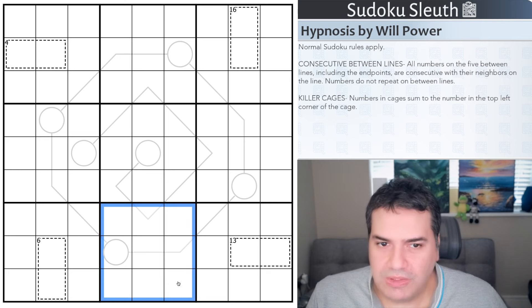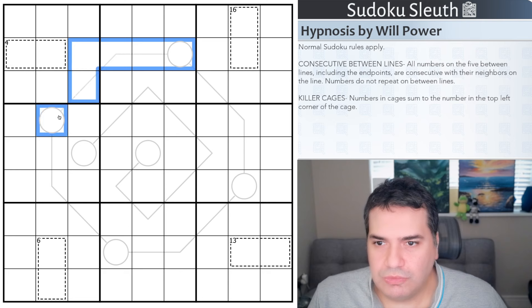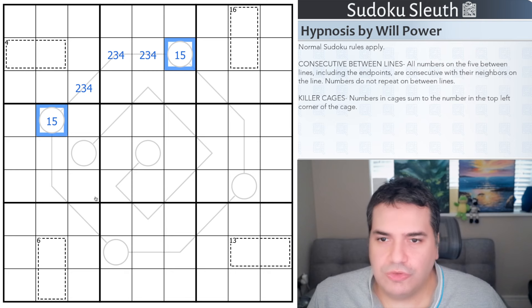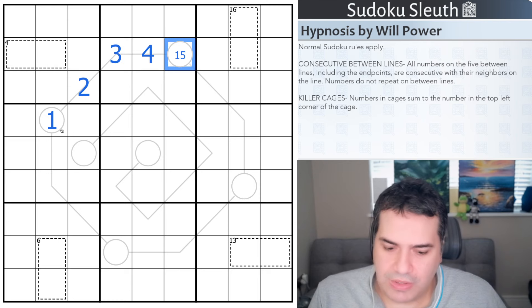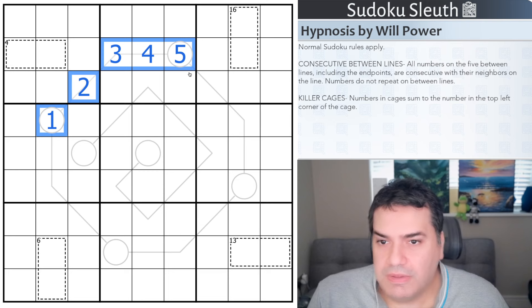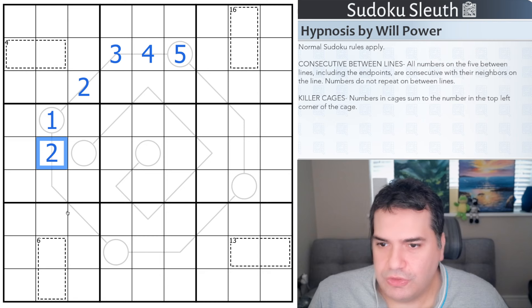Then we have consecutive between lines, featured before from Will Power. Normally when you see circles connected with lines, the digits along the line have to be between the two ends, and it's not inclusive. However, in this case, Will is specifying they have to be consecutive. So if that's a one, that would have to be two, three, four, and five. They absolutely have to be consecutive, either climbing or going down, and we have to figure out which is which.